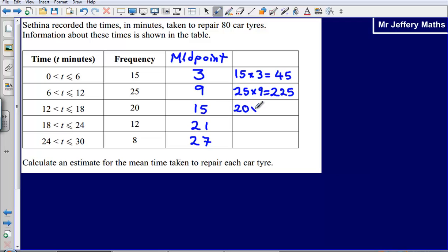20 times 15, that's going to give me a value of 300. Then 21 times 12, that's going to give me a value of 252, I think.